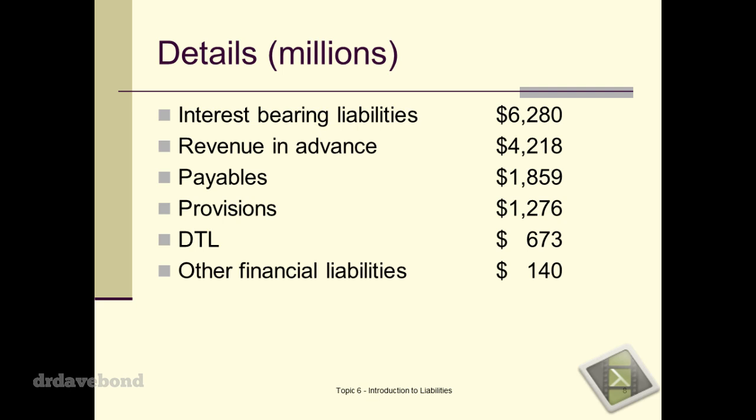Revenue received in advance is the next biggest at $4.2 billion. Why would Qantas have such a large component of this? Flight tickets — you never pay for a flight after the fact. But when you actually look into the notes, the frequent flyer program is a big portion of that revenue received in advance — that is a liability sitting in their books. It's useful to look at the notes, especially when you consider Virgin just posted a loss and is talking about selling off their frequent flyer program.